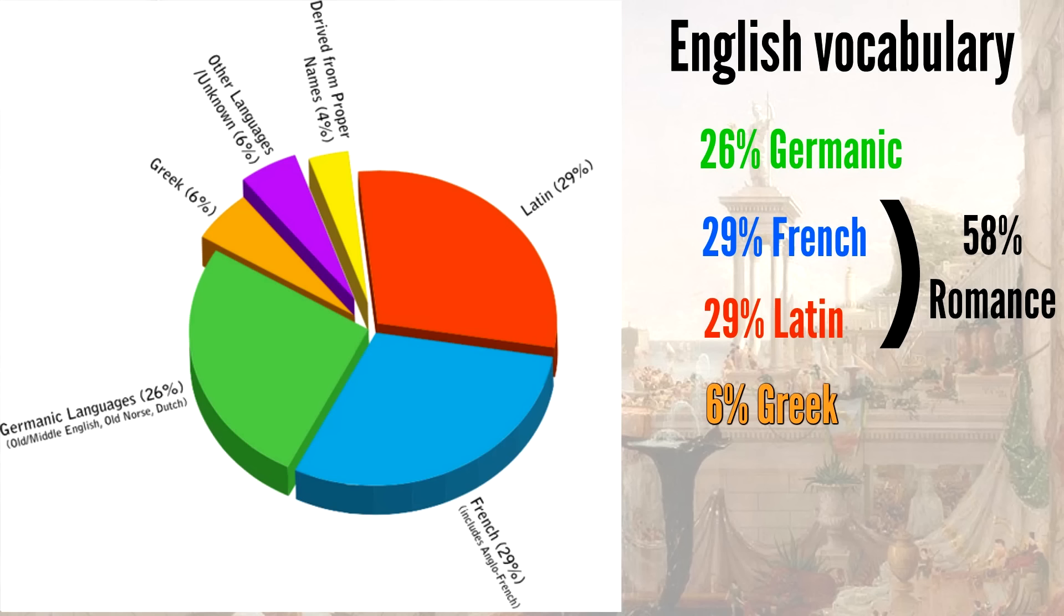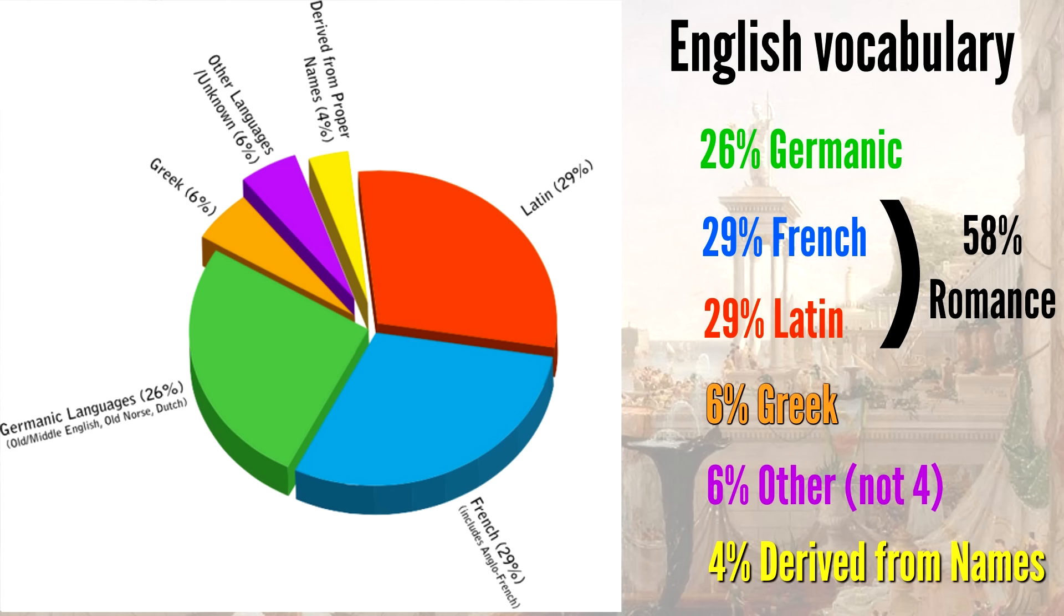Wow, that's more than I thought. Another 6% comes from Greek, another 4% comes from other languages, and 4% comes from proper names. I can't really think of any vocabulary that comes from proper names, aside from Randy.